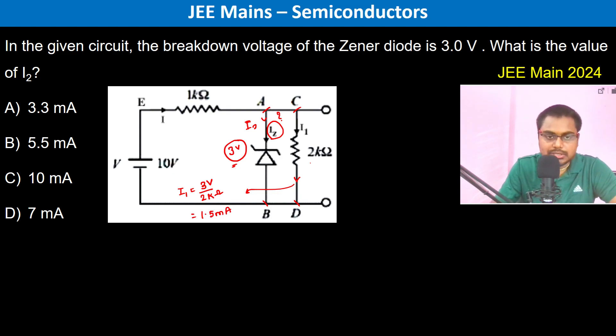Now since this is 3 volts, the potential difference across the 1 kilo ohm resistor must be 7 volts because of Kirchhoff's loop law. This is 10 volts, this is 3 volts, so the potential difference must be 7 volts.